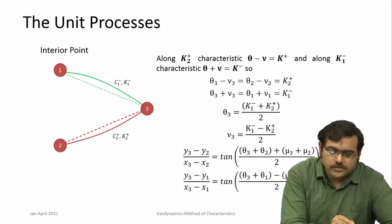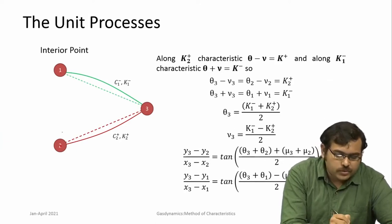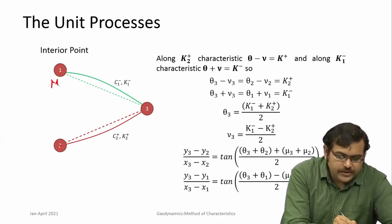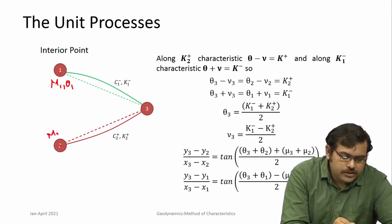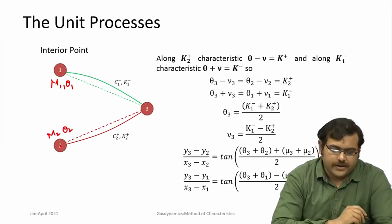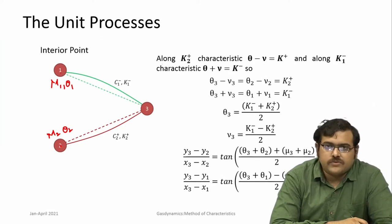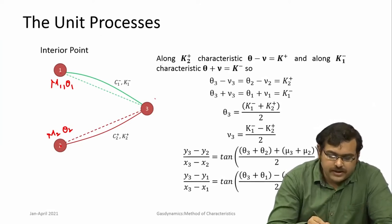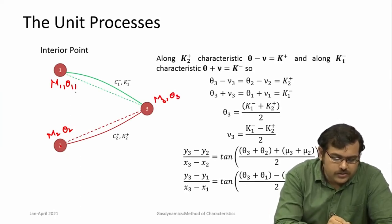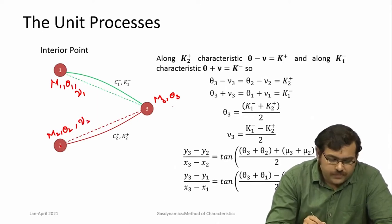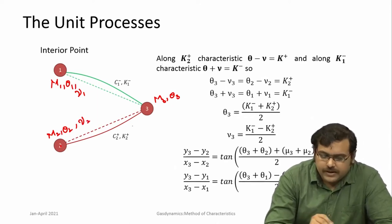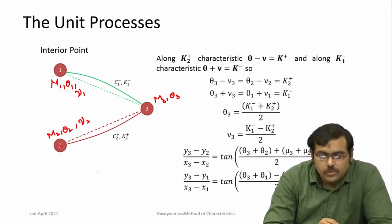Let us take two points which we know: points 1 and 2. We know the values m1, theta1 and m2, theta2. Our interest is to find m3 and theta3. If you know m1 and m2, you also know the Prandtl-Meyer angles nu1 and nu2. So we are interested to find m3 and theta3.